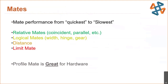For mate speed from quickest to slowest: fastest are relative mates — shown in green — which are your standard mates like coincident and parallel. Next fastest are logical mates: width, hinge, and gear mates. Then distance mates, and the most expensive are limit mates. Limit mates allow a lot of movement in the assembly, which comes with a much higher computational cost.